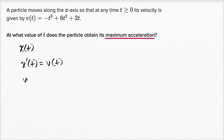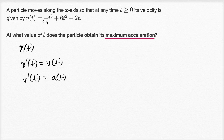And if we take the derivative of our velocity, that's going to be the rate of change of velocity with respect to time — that's acceleration as a function of time. So they give us velocity, and from velocity we can figure out acceleration.